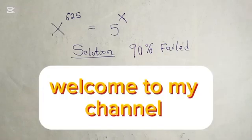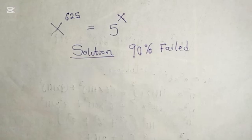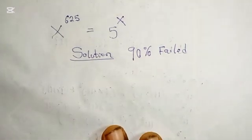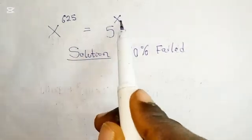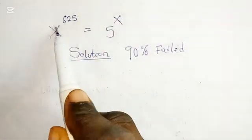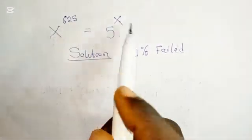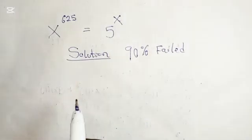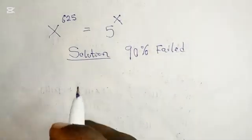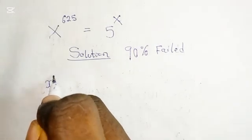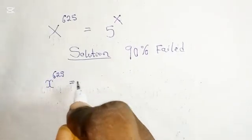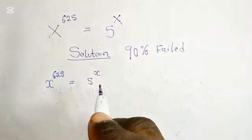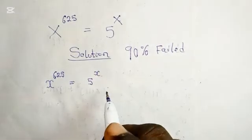Welcome to today's session. Let's solve this math problem. What we will first do is bring this to this side and bring this to this side. We have x to the power 625 equals 5 to the power of x.